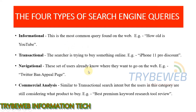Navigational queries are from users who already know where they want to go on the web, but probably can't remember the direct URL, or the URL is so complex that it would be easier to just search for it with some keywords. Examples: Twitter ban appeal page, Tribe web information tech, YouTube audio library, Facebook business manager.